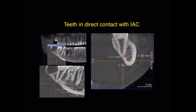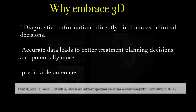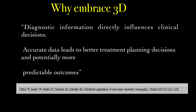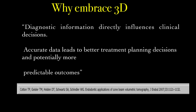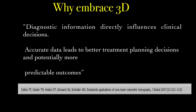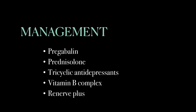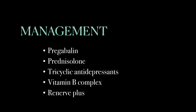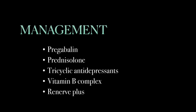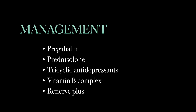In these CBCT cross-sectional images you can see the position of the inferior alveolar canal — in the 4-7 region the canal has a lingual course, whereas in the 4-5 region it has a buccal course. These CBCT images show the relationship of the inferior alveolar canal to the root apex, with the tooth root in contact with the superior cortex of the inferior alveolar canal. We need 3D imaging because diagnostic information directly influences clinical decisions — accurate data leads to better treatment planning and more predictable outcomes.